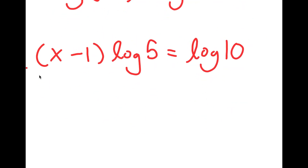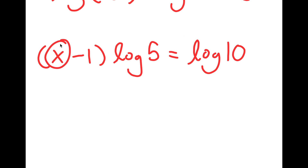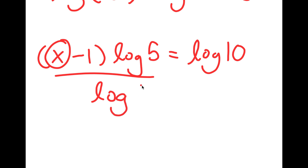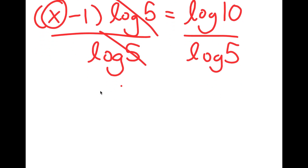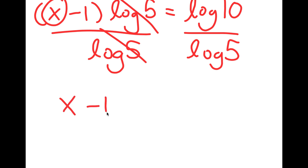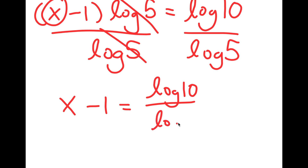Now, from here, our main focus is to find the value of x. And to do that, we have to get rid of this log 5. The only way to get rid of the log 5 is to divide both sides by it. So these two log 5s cancel out, and I'll be left with x minus 1 is equal to log 10 over log 5.